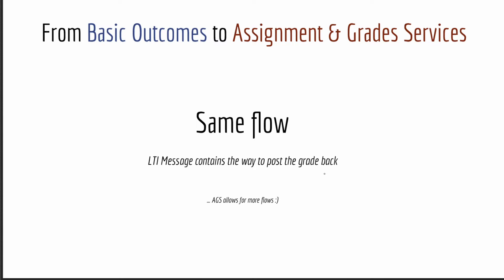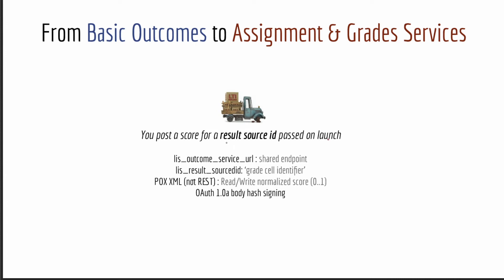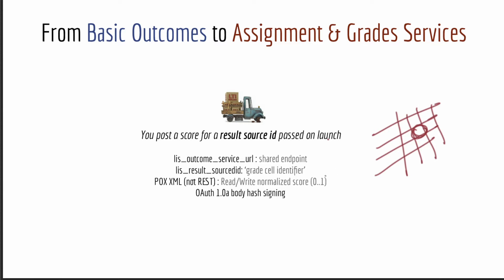In LTI 1.1, a very important feature alongside launching was the ability to report a score through basic outcomes. The LTI payload contains a result source ID — essentially an identifier for a cell in your gradebook — and an outcome service endpoint where you post results. You post the result source ID and a normalized score from 0 to 1 in XML format, signing with your key and secret.